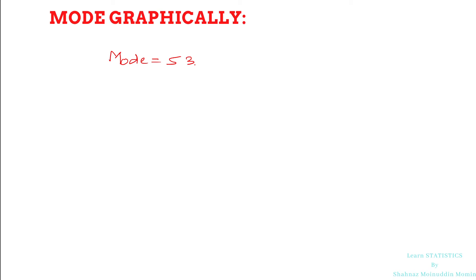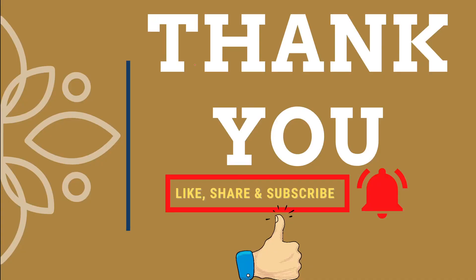In this lecture we learned how to obtain the value of mode graphically. In the previous lecture we learned various formulae for mode in the case of individual data, discrete data, and continuous data, and examples on these three types are discussed on the Learn Statistics platform. If you want to learn those examples, click the i button at the top right corner — the playlist link is also in the description below. If you liked this lecture, click the like button and share it with your classmates. We will meet in the next lecture with the next concept from statistics. Thank you.